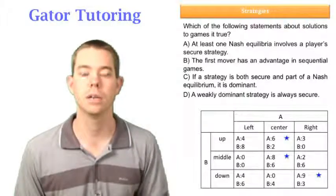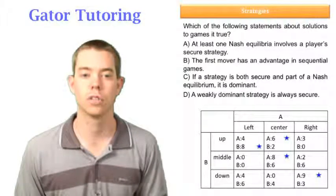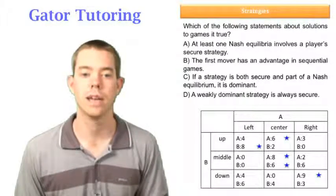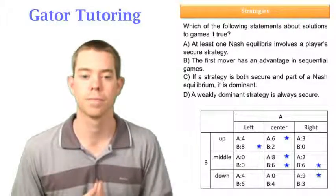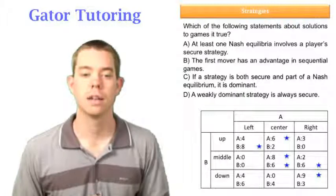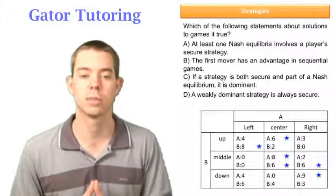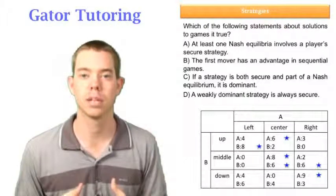For B: if A chooses left, B picks 8 over 0 and 6. If A chooses center, B picks 6 over 2 and 4. And if A chooses right, B picks 6, which is better than 0 or 3. So the pure strategy Nash Equilibrium happens where B plays middle and A plays center.